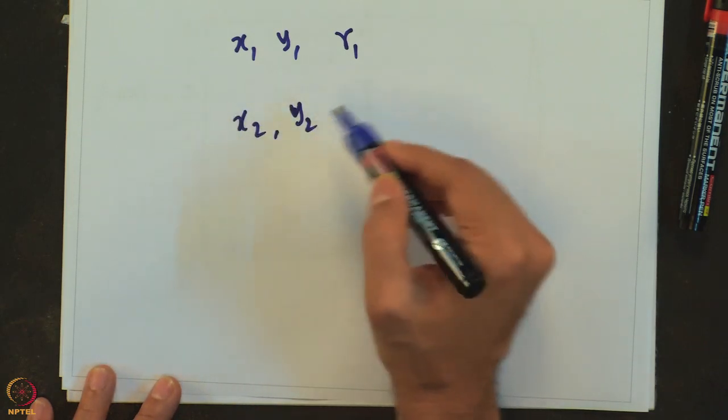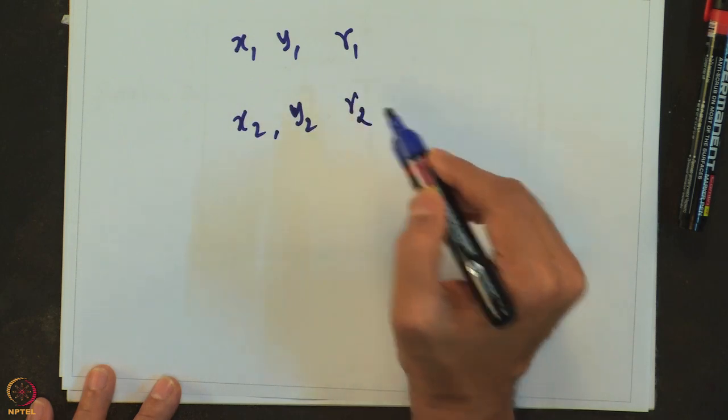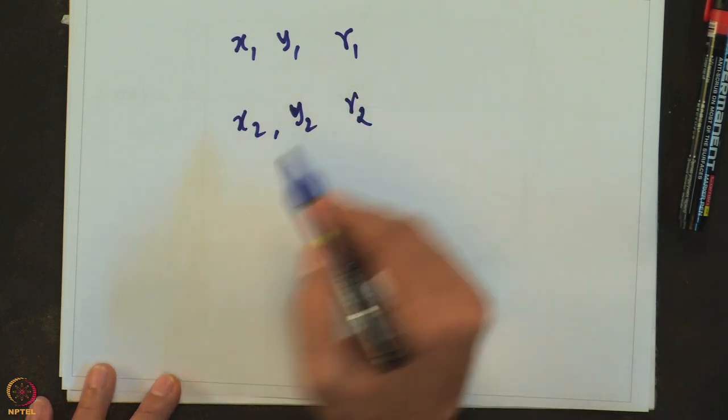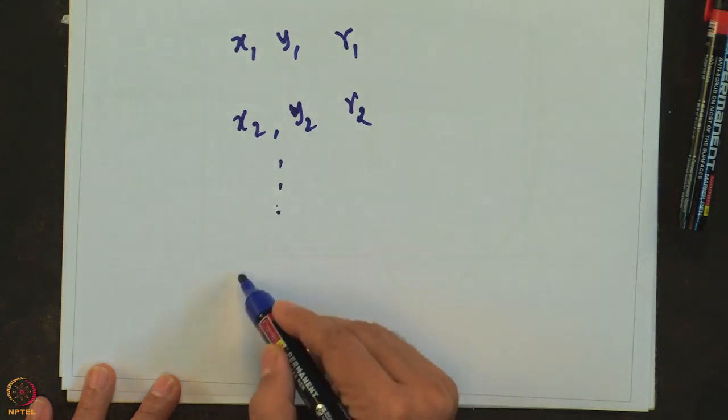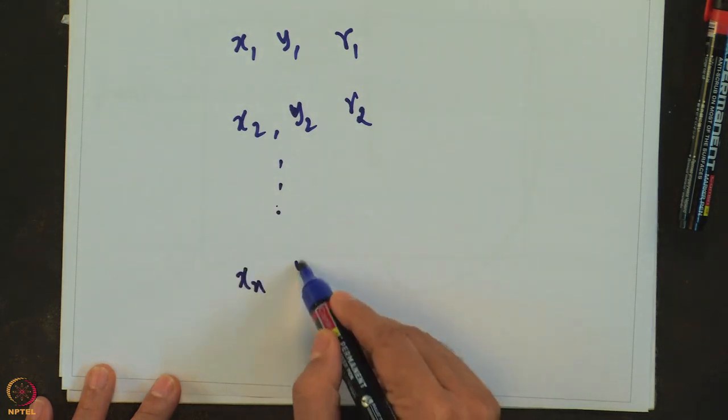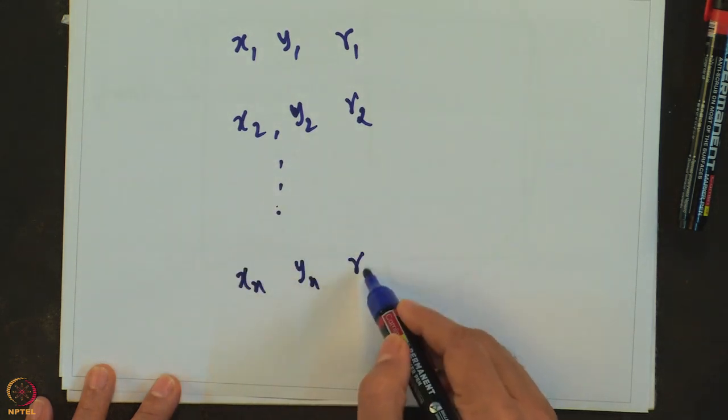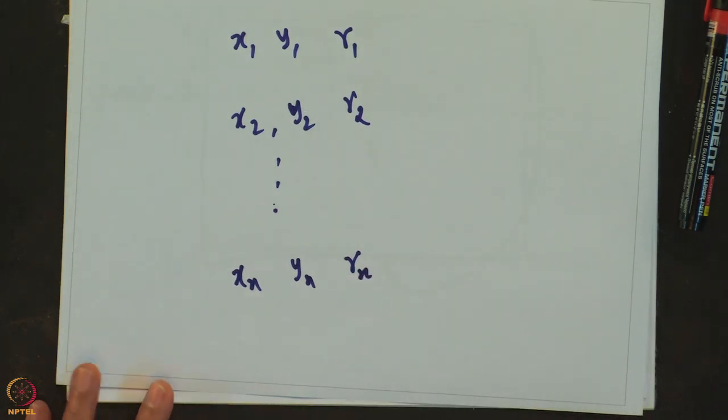The coordinates of the centers of the first disk and r2 which is the radius of the second disk and so on until some xn, yn, rn. So you are given these n triples of numbers. The first two numbers give the coordinates of the center of that disk and the last number gives the radius of that disk.